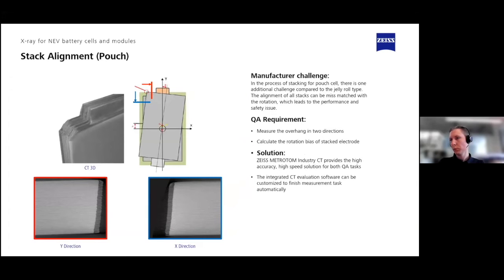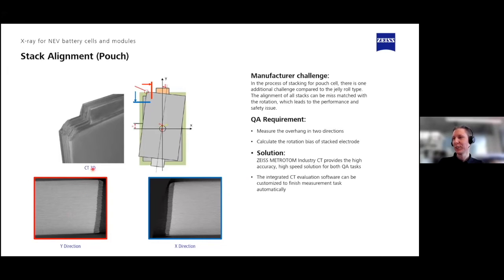You can also check the misalignment of the separator layers in a stacked cell. Here you can see the 3D data of the separator layers between electrodes. Then, by virtually cutting the sample into regions — the blue cut in the X direction, the red cut in the Y direction — and based on this information, you can then calculate the misalignment, meaning the angle between the different layers.